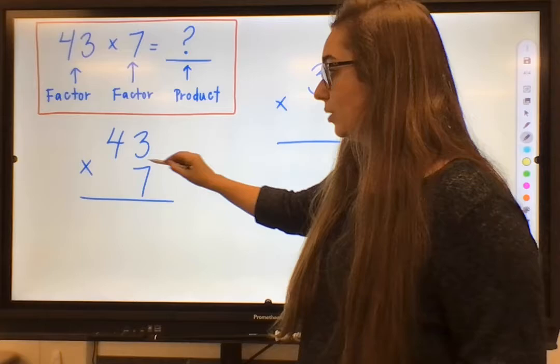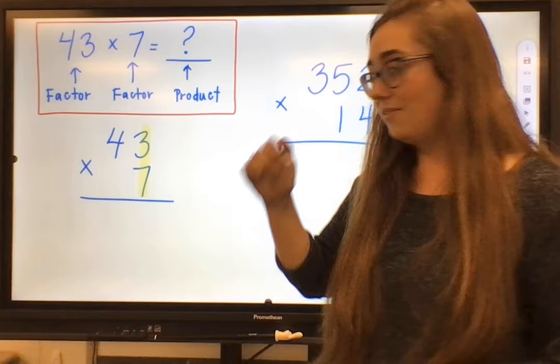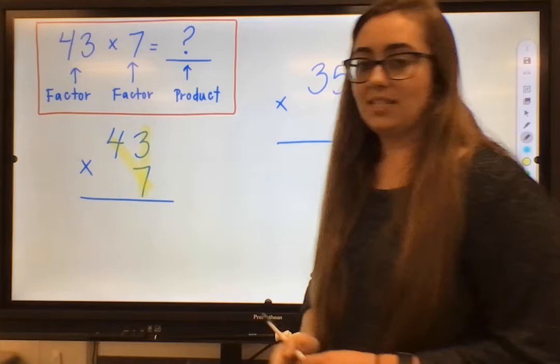So to show you this, let's go ahead and start with this first problem of 43 times 7. I start down here in the bottom right hand corner with my 7. I'm going to multiply upwards to that 3, the digit directly above it, and then I'm going to go diagonal from right to left, going to that 7 times 4.